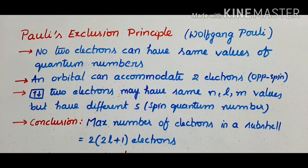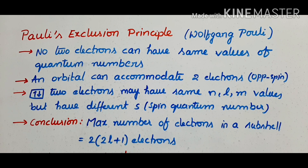The Austrian scientist Wolfgang Pauli's principle states that no two electrons can have the same values of quantum numbers. Each electron in an atom is designated by its 4 quantum numbers — 4 identification numbers. In the atom, no two electrons can have the same set of quantum numbers.